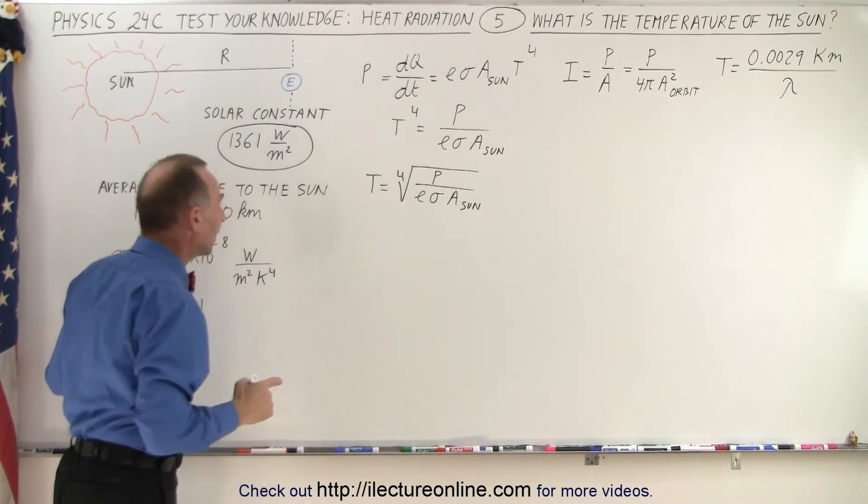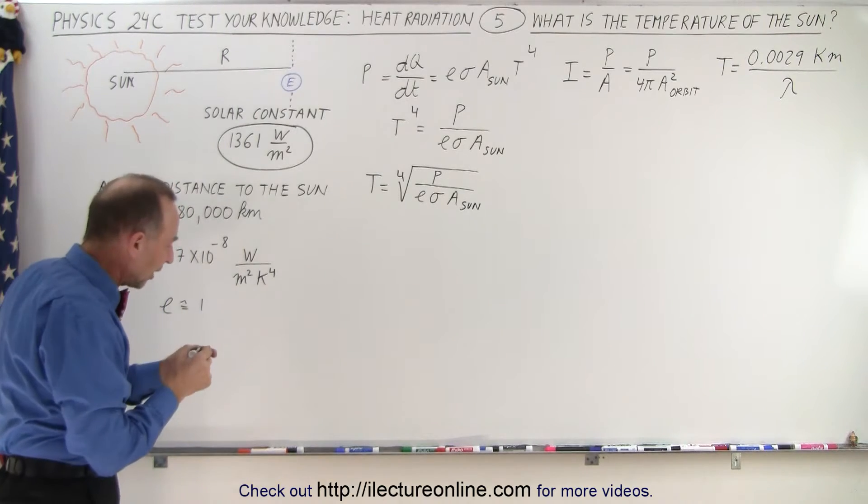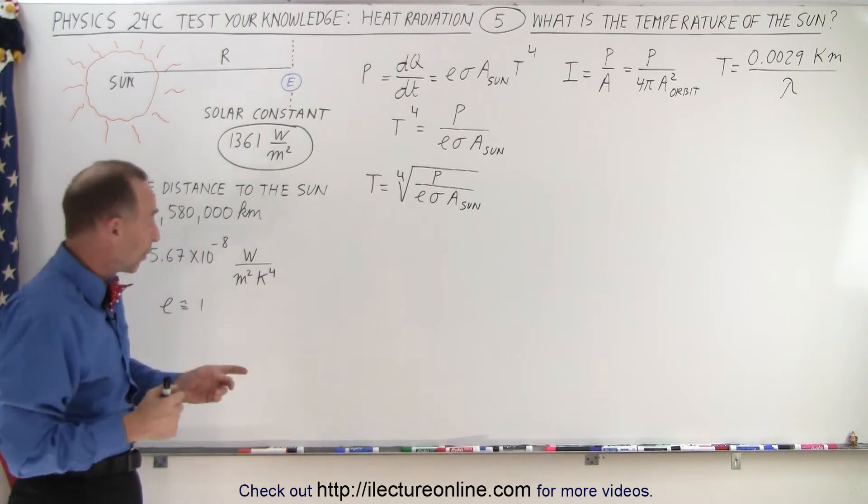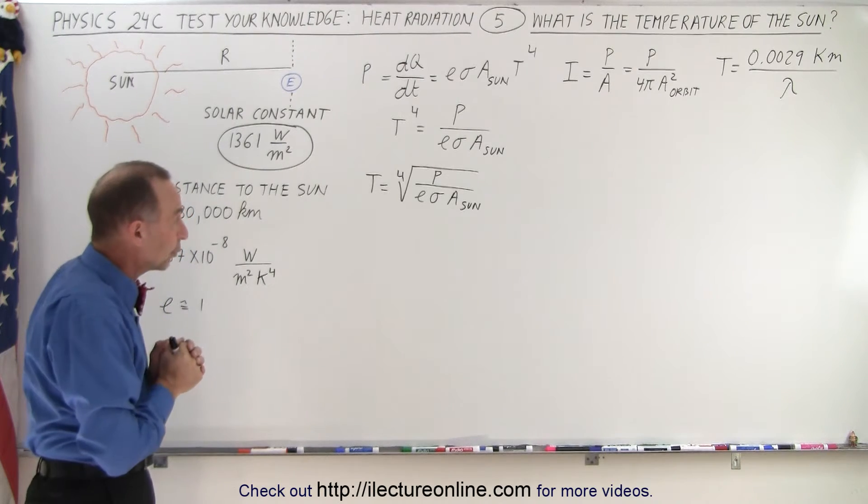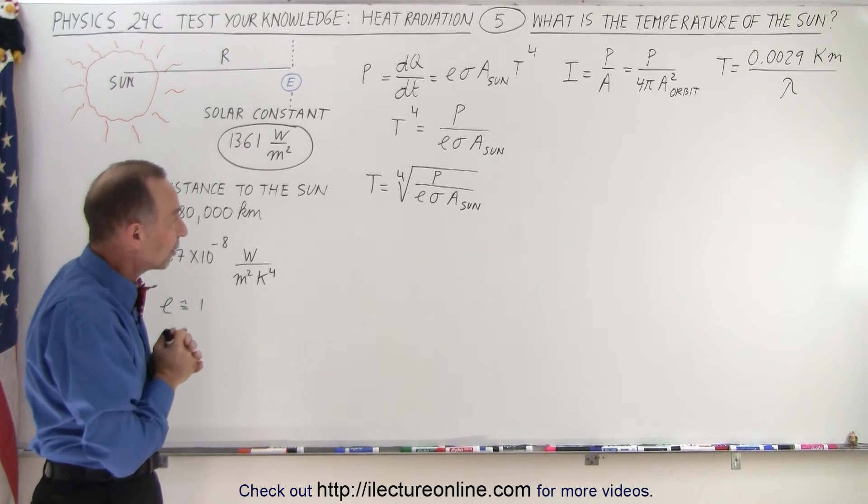Notice that the emissivity of the sun, the emissivity of a perfect blackbody, is equal to one, and for most stars that is very close to being equal to one, so we can go ahead and say E equals one.